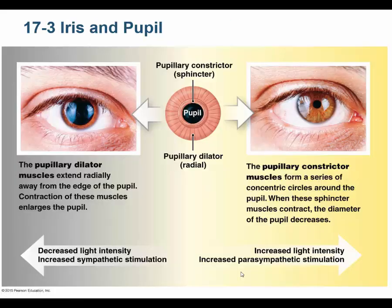Your iris is made of two muscles. You have the pupillary dilator muscles — they are radial muscles, running radially like spokes. When they contract, your pupil dilates, so your pupil becomes large. You also have the pupillary sphincter muscles, also called the constrictor muscles — these are circular muscles. When they contract, your pupil constricts.